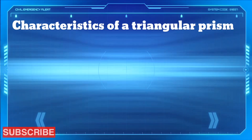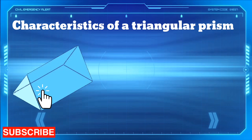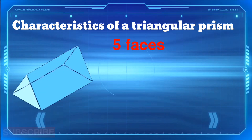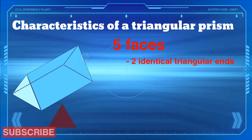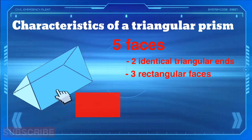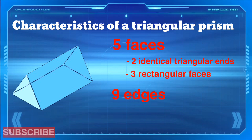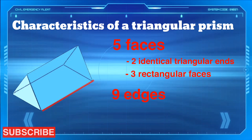Characteristics of a triangular prism. A triangular prism has five faces with two identical triangular ends and three rectangular faces. It has 9 edges and 6 vertices.